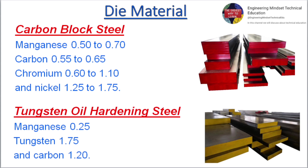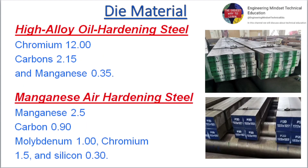Tungsten oil hardening steel: manganese 0.25, tungsten 1.75, and carbon 1.20. High alloy hardening steel: chromium 12.00, carbon 2.15, and manganese 0.35.